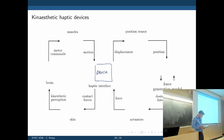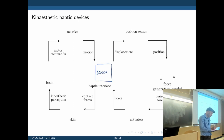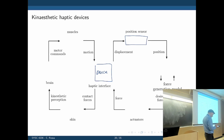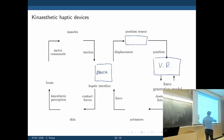We can measure the state of the haptic device — for example, the position of the end effector or the position of individual joints. Using forward kinematics, we find the position of the tool tip. That position goes into a virtual reality simulation, which detects and calculates the forces we want to display to the user. These forces come back, and motors apply force back to the user through the haptic device.